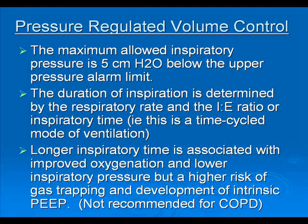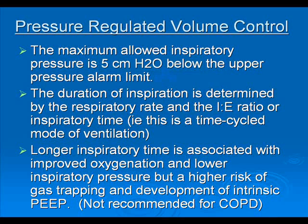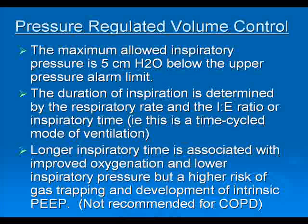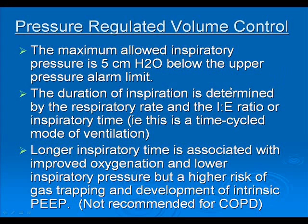The maximum allowed inspiratory pressure is five centimeters below the upper pressure alarm limit. You set a high pressure alarm limit, which effectively caps the pressure. If the patient is experiencing increased resistance or compliance, the ventilator can only increase pressure up to five centimeters below this upper pressure limit — it won't keep increasing pressure indefinitely to try to give the set tidal volume. If the person requires that much pressure, they need to be assessed. The duration of inspiration is determined by the respiratory rate and the IE ratio or inspiratory time — this is a time-cycled mode of ventilation.